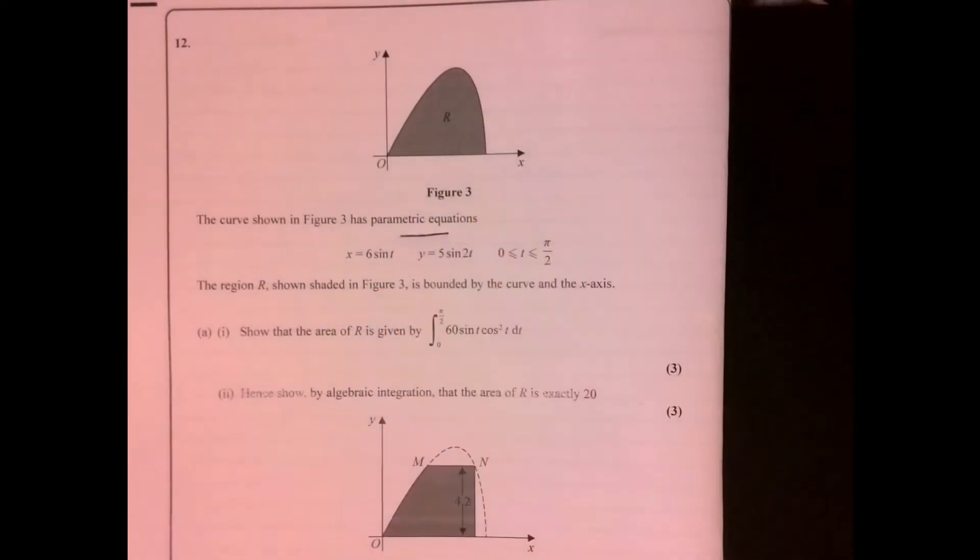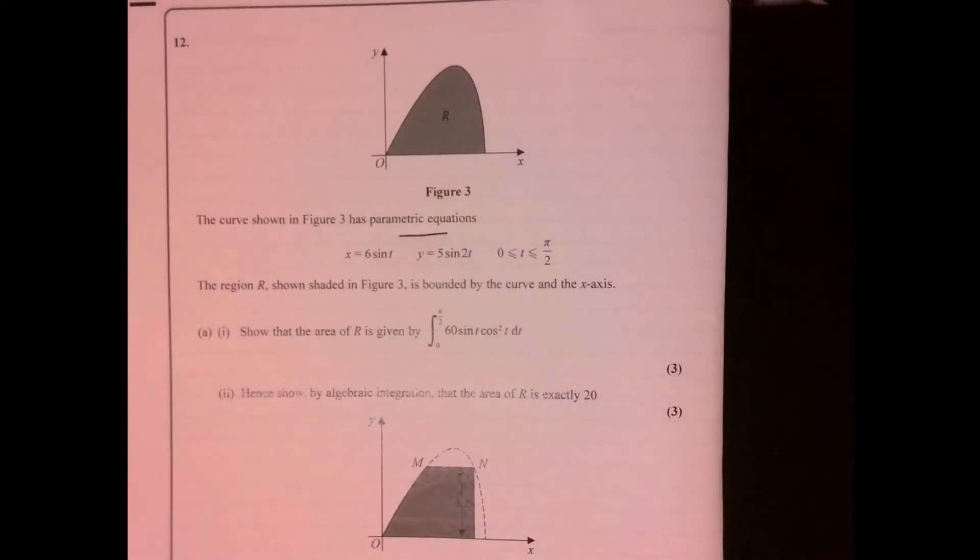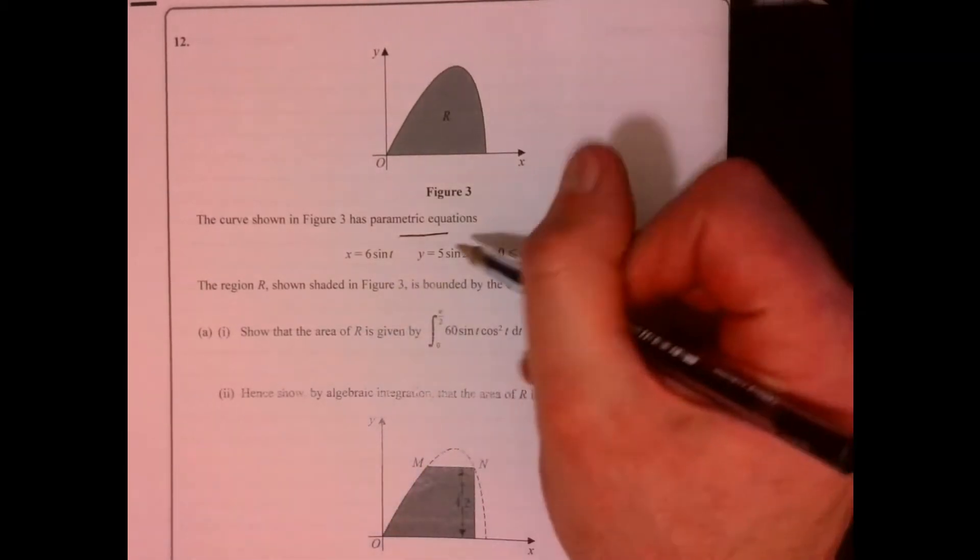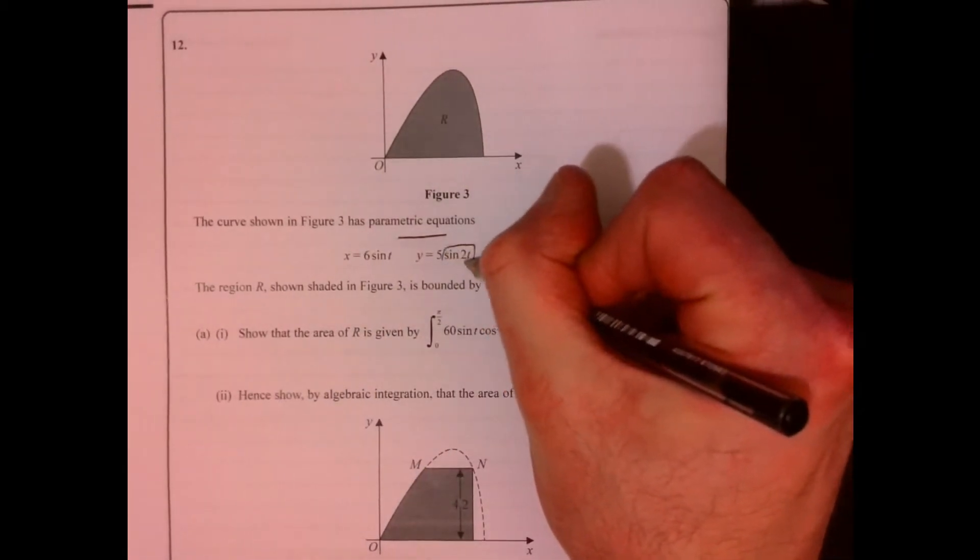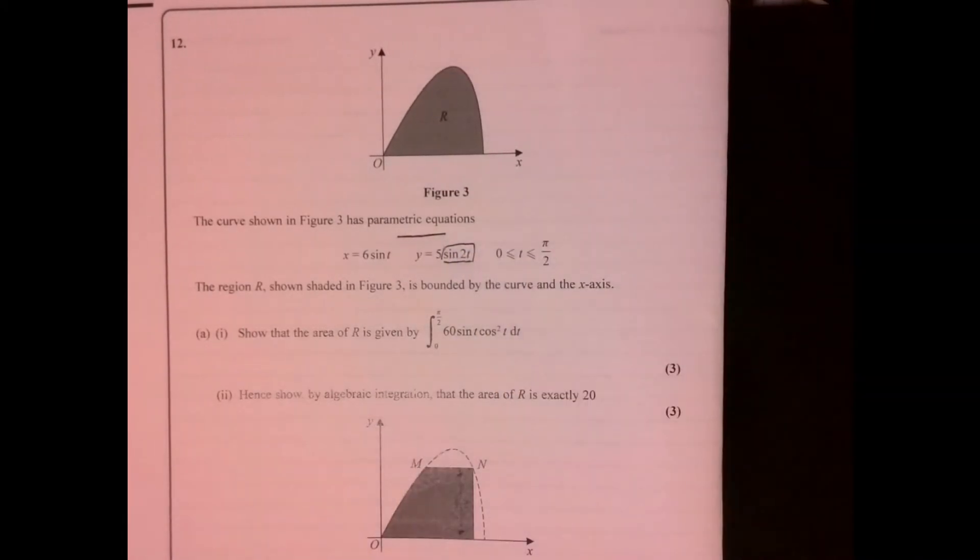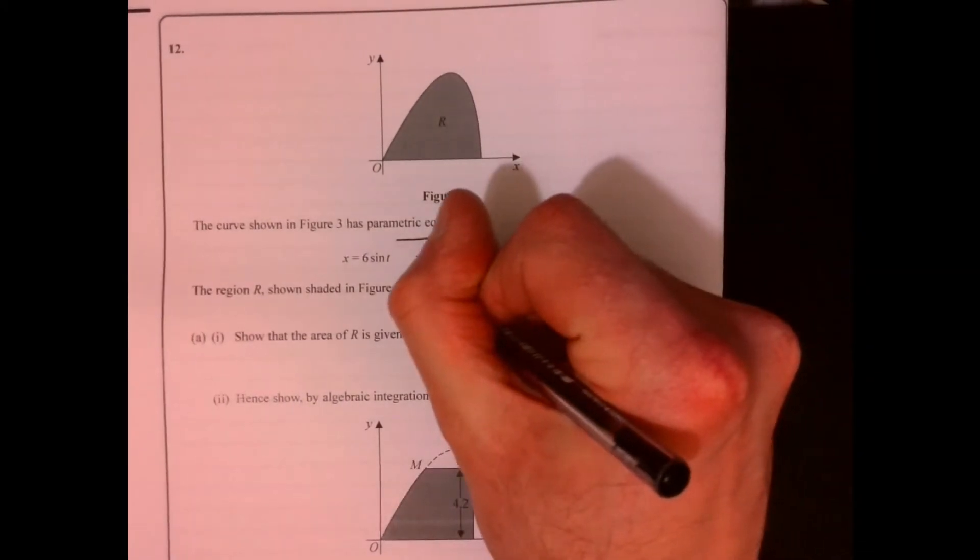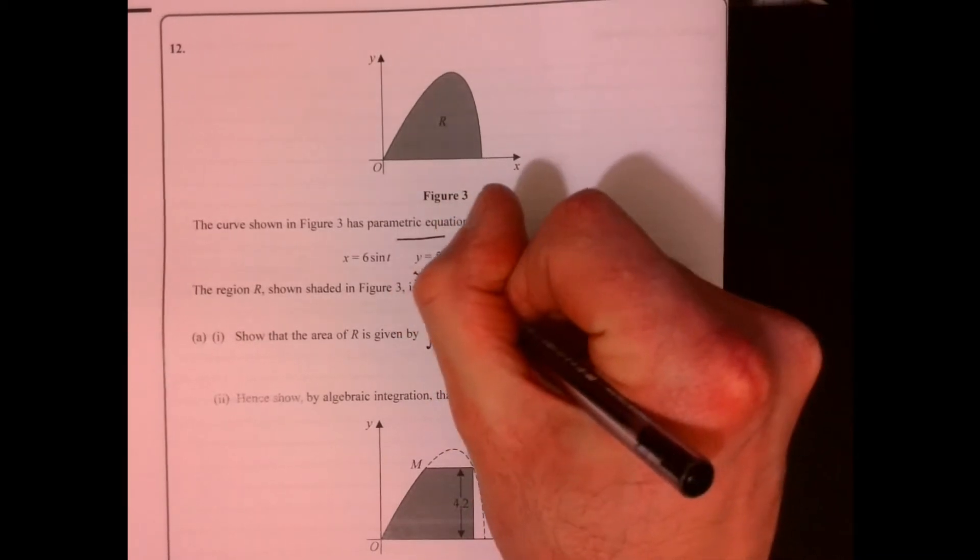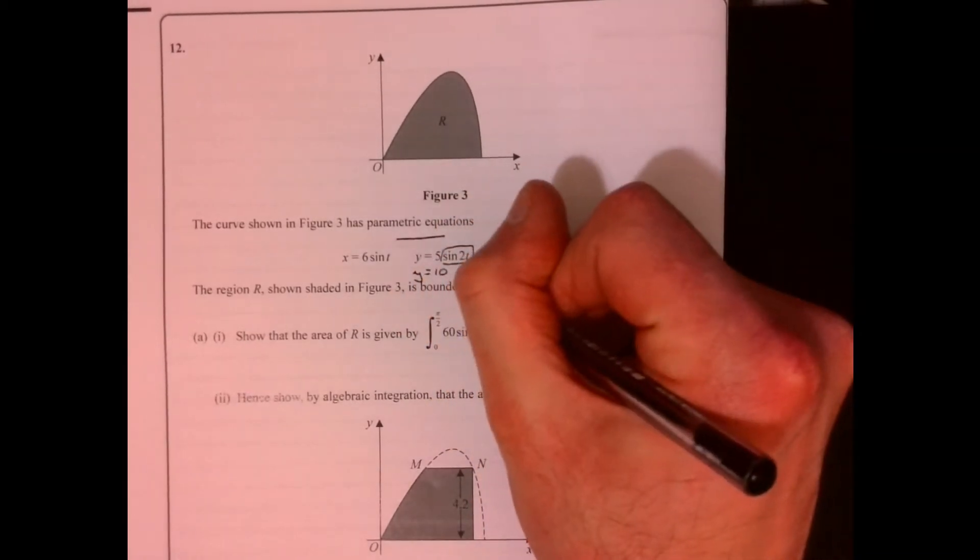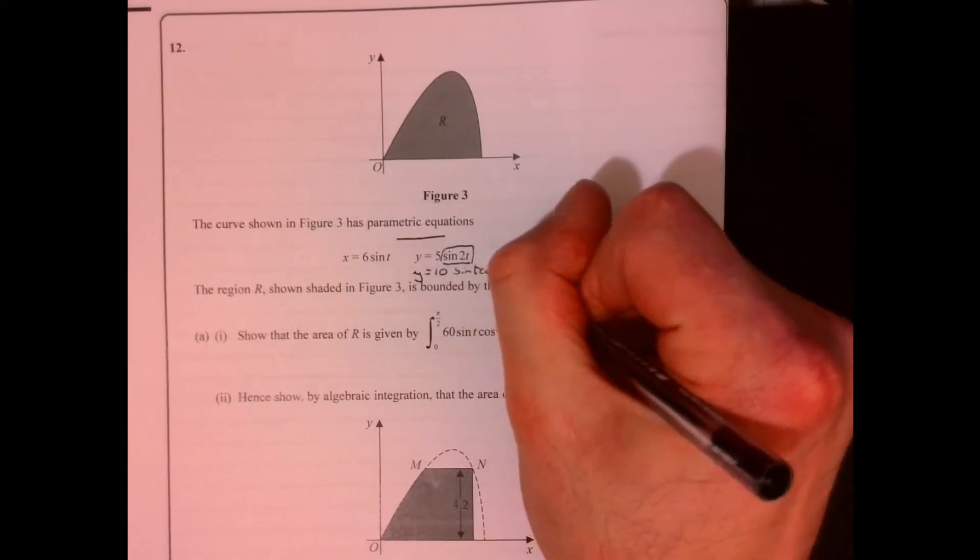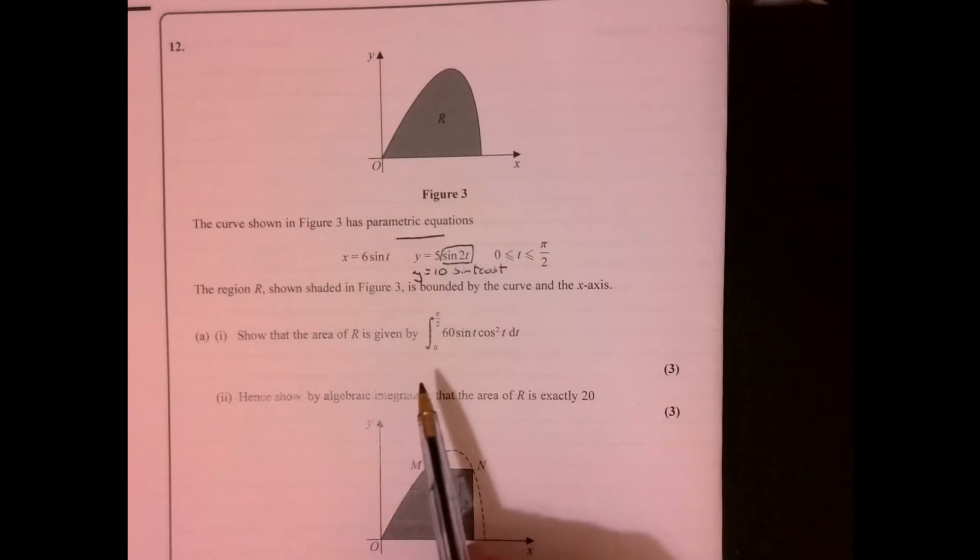Parametric equations can be a little bit scary, let's just start off and think about anything obvious that we can do. Well look, sine 2t, so that's 2 sine cos, so if I just change this, let's just put that in there, so that'll end up being 10 sine t cos t. Now we want to integrate this.